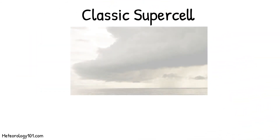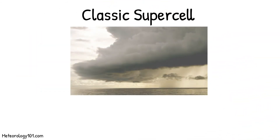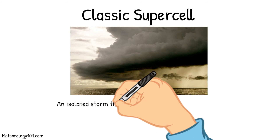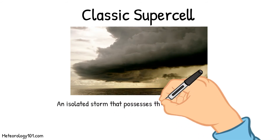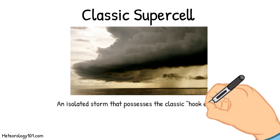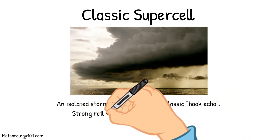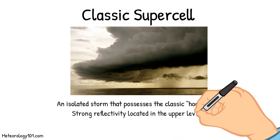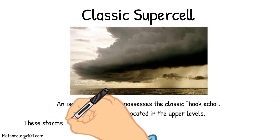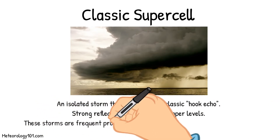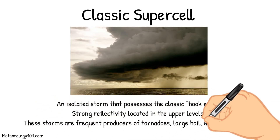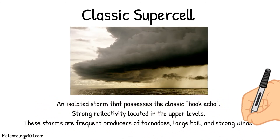A classic supercell thunderstorm is an isolated thunderstorm that possesses the classic hook echo, with strong reflectivity located in the upper levels. These storms are frequent producers of tornadoes, large hail, and strong winds.